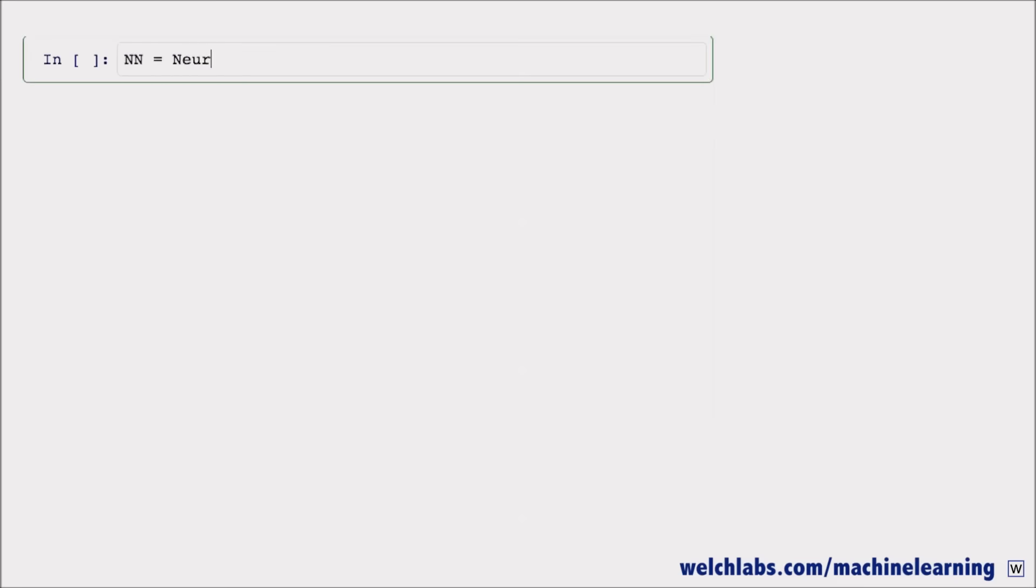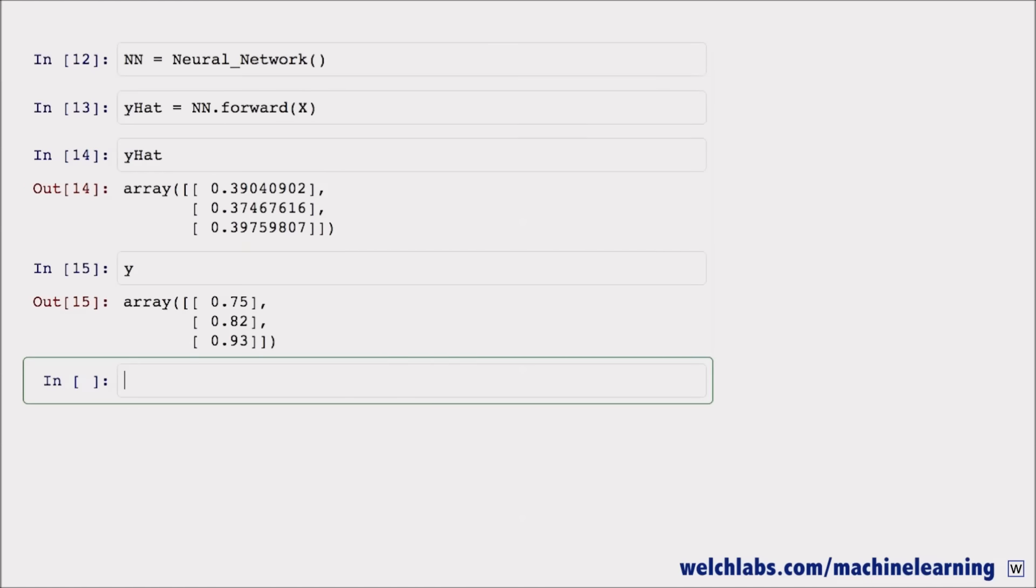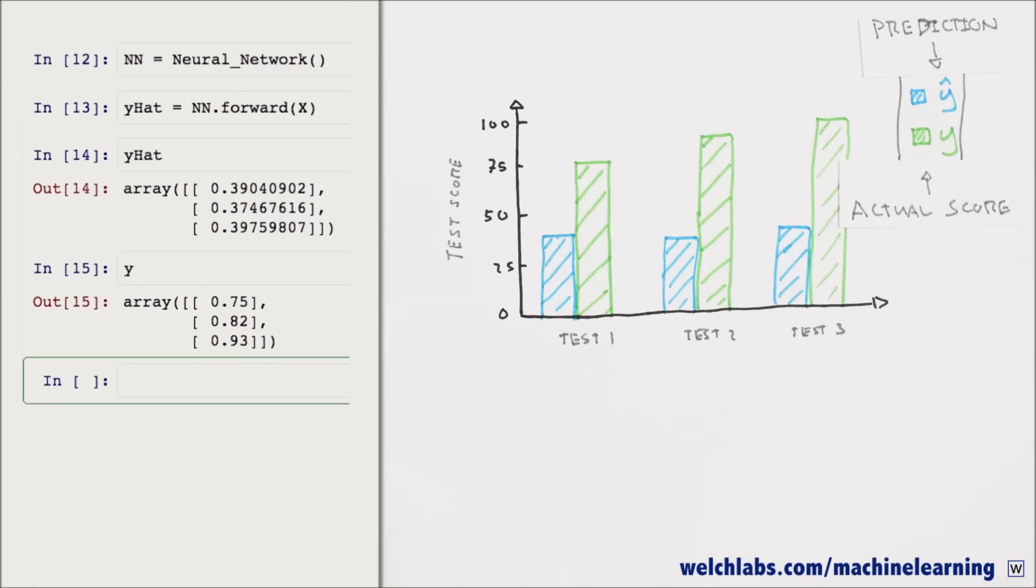We can initialize the network we built last time and pass in our normalized data X using our forward method and have a look at our estimate of y, y hat. Right now our predictions are pretty inaccurate. To improve our model we first need to quantify exactly how wrong our predictions are.